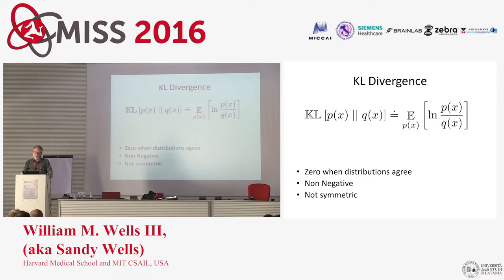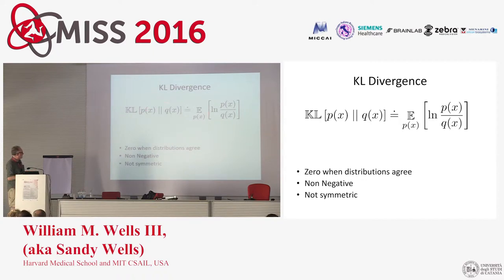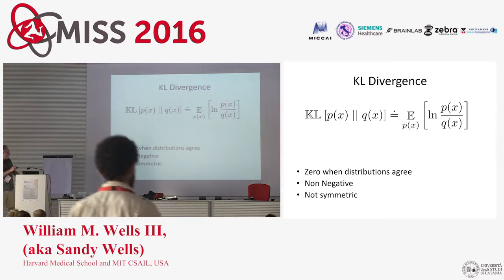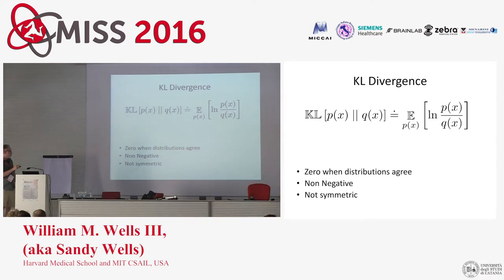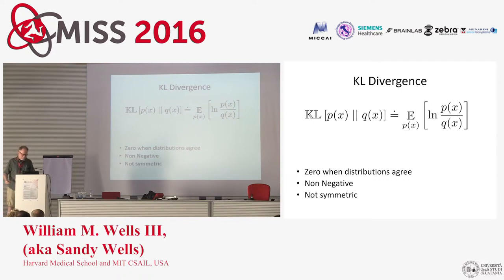KL divergence — reviewing this again — is the expected value of a log ratio. It compares two distributions. By definition, it's the expected value under one distribution of the log of the ratio of the two distributions. It's easy to see that if the distributions are the same, it's zero. With Jensen's inequality, it's pretty easy to see it's non-negative, and it's also clear that it's not symmetric. But it's pretty useful.